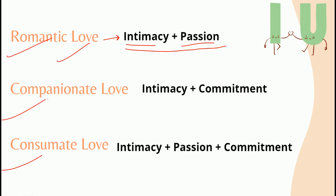The second heavily researched type is companionate love. Companionate love involves intimacy and commitment — that is, emotional ties and the decisions one makes about their relationship. In this type of love, people feel very emotionally connected and close to each other, and they also understand that they have made a commitment to stay in the relationship together.